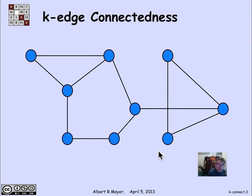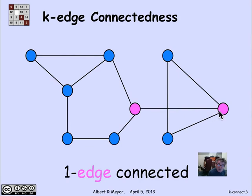Here's a graph. Let's focus on those two vertices that I've highlighted in magenta. They are one edge connected because they're connected, and if you remove one edge, they become disconnected. So they're one edge connected, but they're not two edge connected.